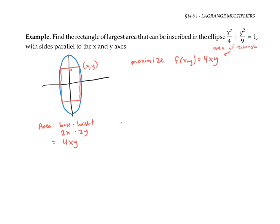Because the rectangle is required to be inscribed in the ellipse, x and y are constrained to lie on the curve given by this equation. So if I let g(x, y) equal x squared over four plus y squared over nine, then my constraint condition is that g(x, y) has to equal one, so that the point will lie on this curve.